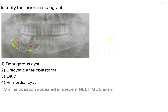You cannot particularly see any form of swelling. Among the three options given — unicystic ameloblastoma, dentigerous cyst, and OKC — all three are present in the molar ramus region. However, the tooth is erupted, so you can ignore dentigerous cyst. It can be completely eliminated as an answer.